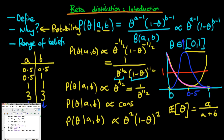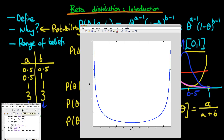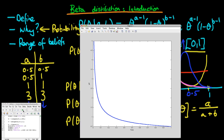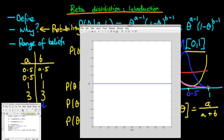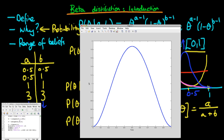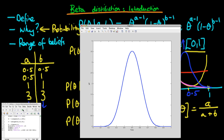Starting with a and b both equal to a half: we see exactly the expected U-shape with asymptotes at theta equals 0 and theta equals 1. If I increase b to 1, keeping a at a half, the distribution is skewed towards 0 with just an asymptote at 0, and the PDF reaches 0 at theta equals 1. Increasing a to 1 gives the uniform distribution on [0, 1] as expected. Setting both a and b to 3 produces a distribution peaked at a half, and increasing both to 10 makes it even more sharply pointed towards a half.